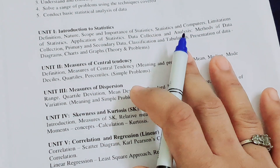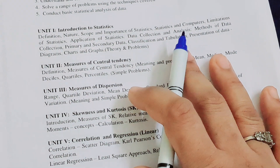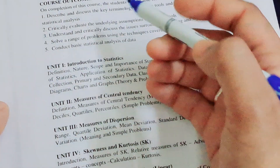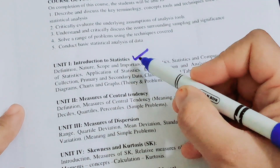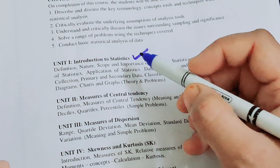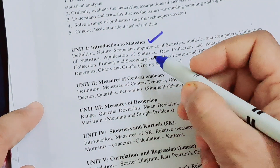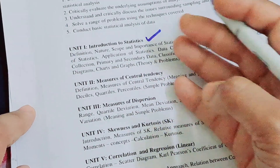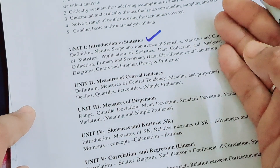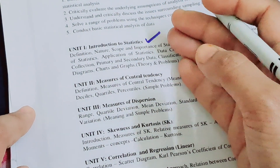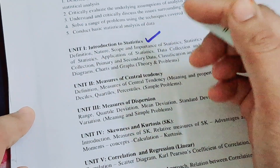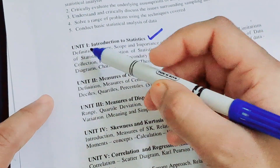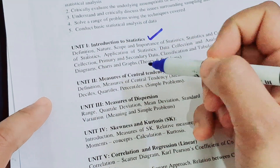Unit one is Introduction to Statistics. In this unit you can study theory, because it is based on the nature, scope, definition, and meaning of statistics. I will tell you what to study from an examination point of view, and there are full details inside.